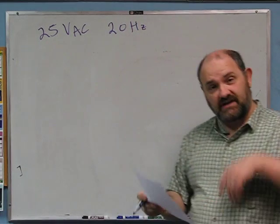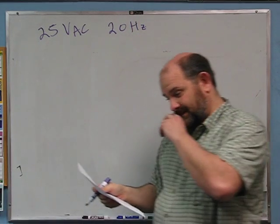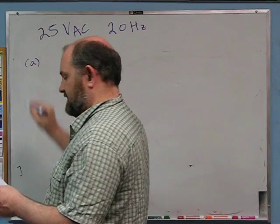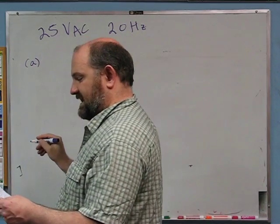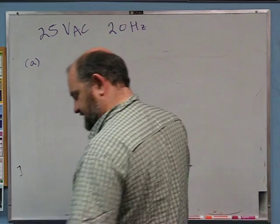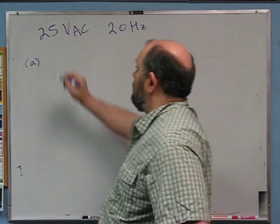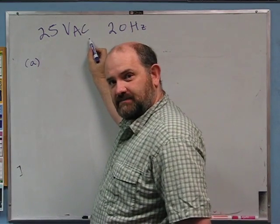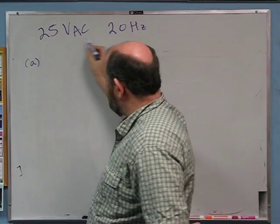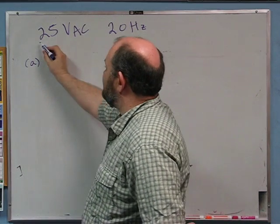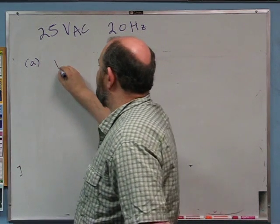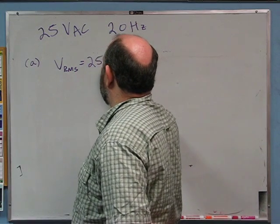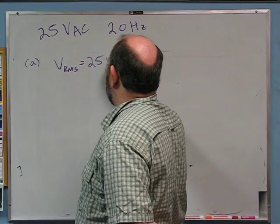Assuming that's what it really does — part A: what is the amplitude, period, frequency, and angular frequency of the voltage signal? First, remember 25 volts AC — when an AC power supply advertises that, that is actually the RMS. So V_RMS for the power supply is 25 volts.